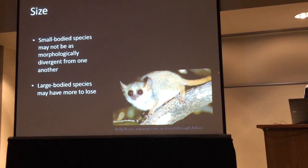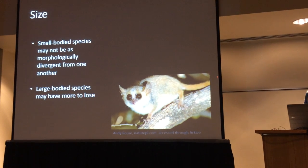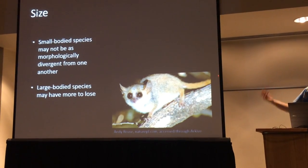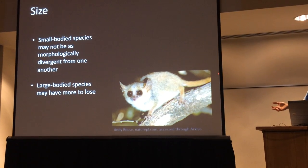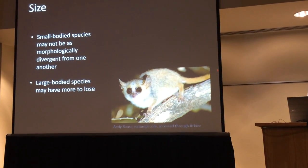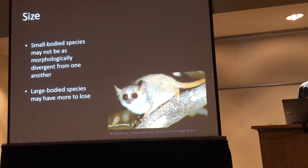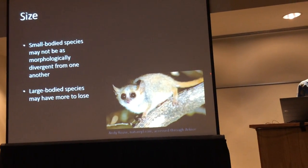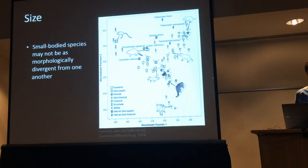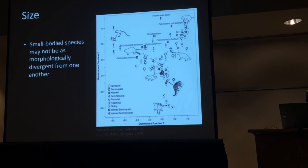And larger-bodied species might have more to lose. If this mouse lemur falls from a tree, it hits terminal velocity, bounces off the ground, and walks away. An orangutan or an indri — that's not really what happens. This, amongst primatologists, is what we call the splat effect, which is a real thing and actually seems to show up in empirical data in these kinds of analyses.